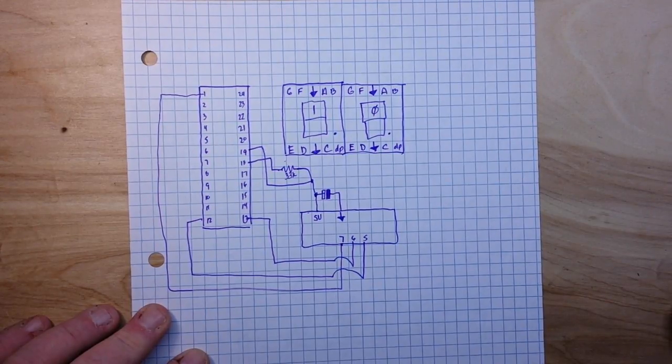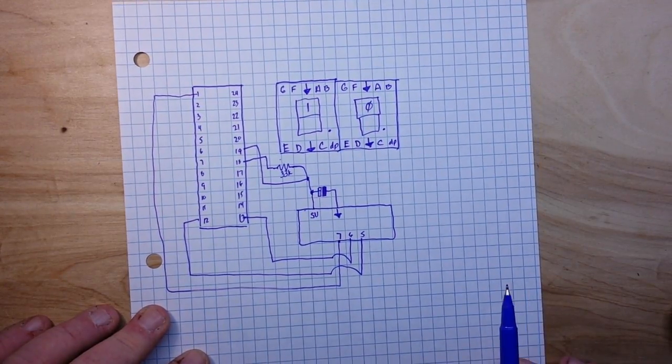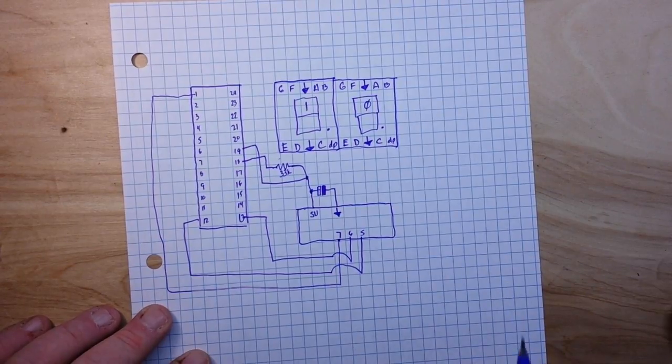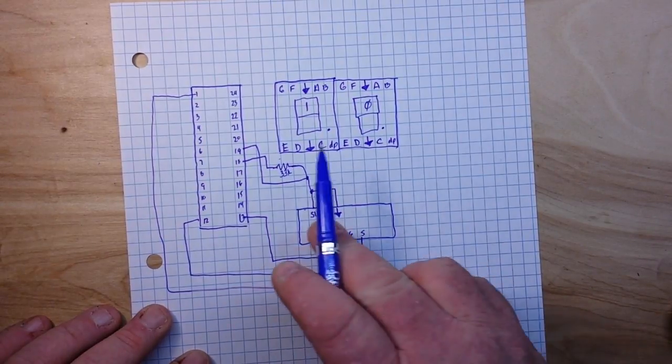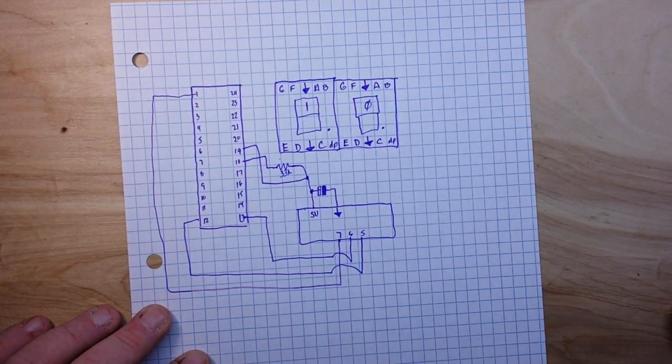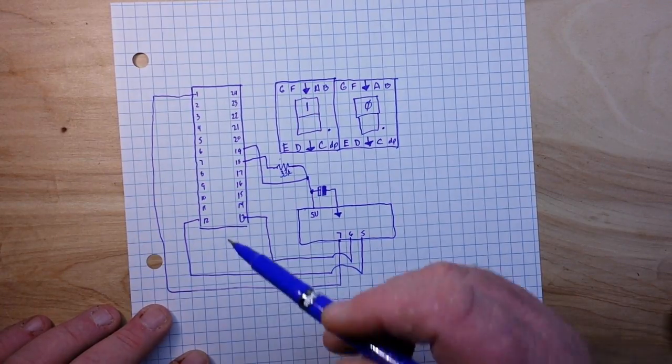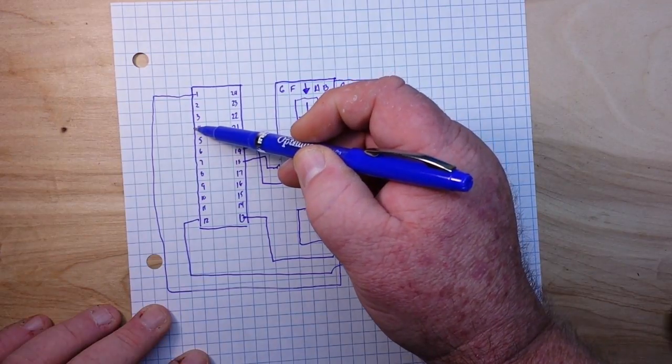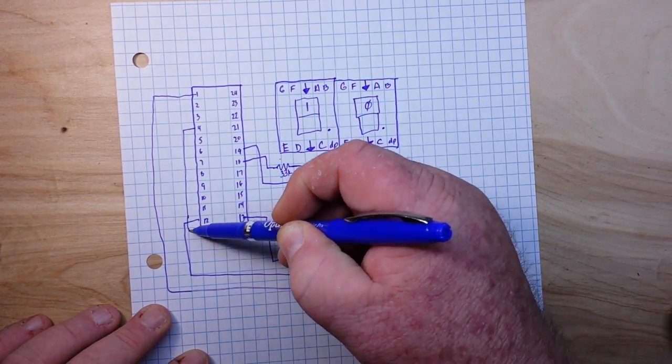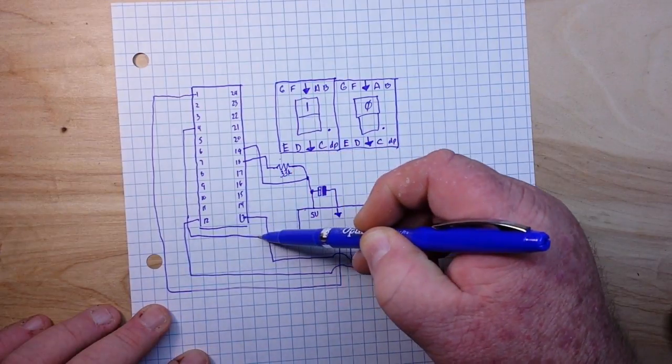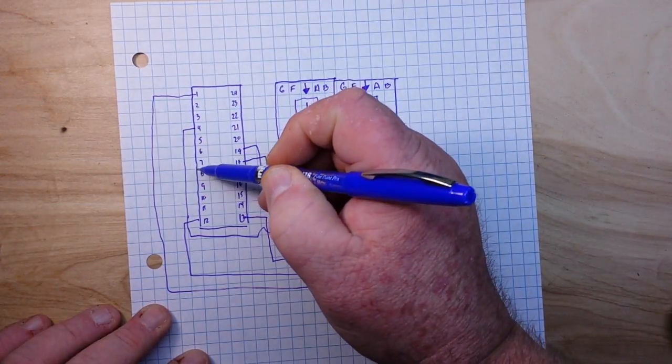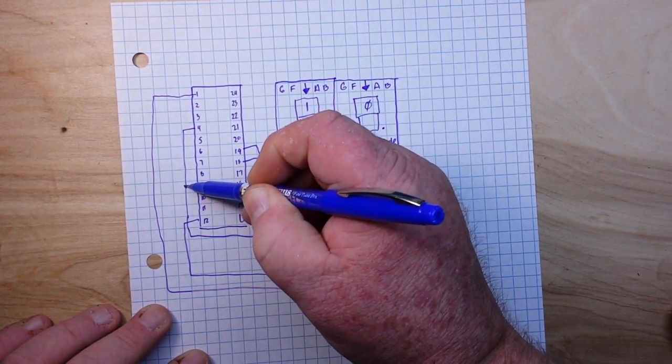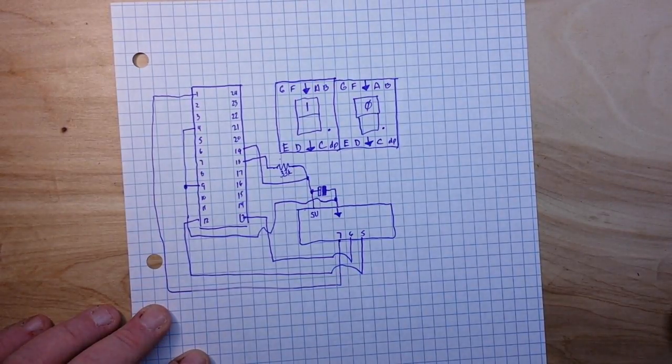Refer to the MAX7219 datasheet if you need to know what value to use for your particular case. It depends on the forward voltage of your displays. All right, so next pins 4 and 9 of the MAX7219 go to ground.